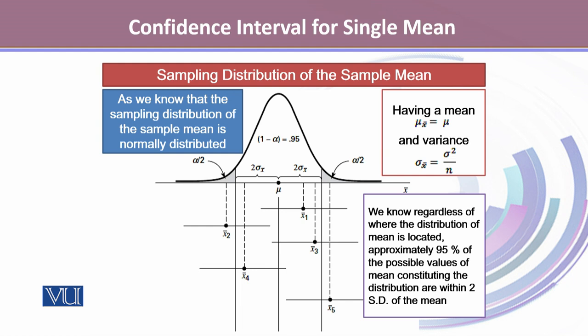This curve shows the sampling distribution of the population mean, where the shaded regions at the tails represent α/2 area,